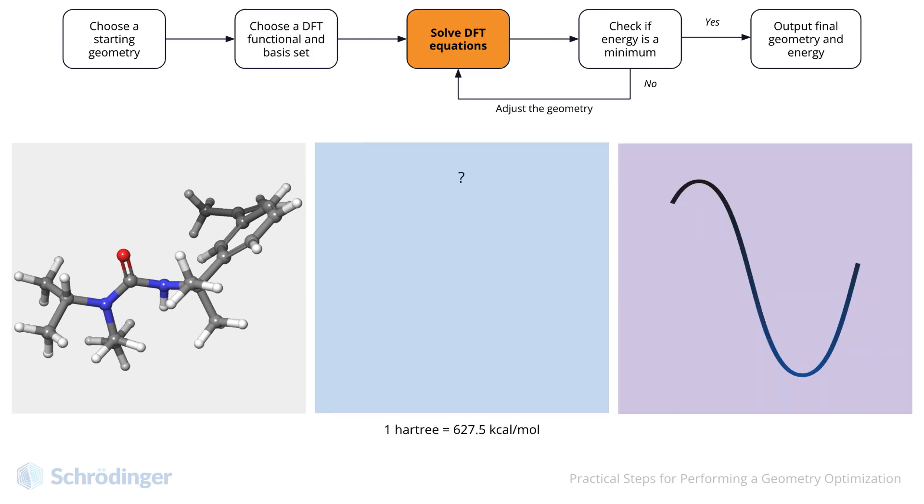Now the optimization begins. Our input geometry is the first geometry. Jaguar will proceed to solve the DFT equations, which generates an energy value. This energy is returned in Hartrees, which can be easily converted to a more well-known energy term, like kilocal per mole. On the right, we plot this energy on a curve.